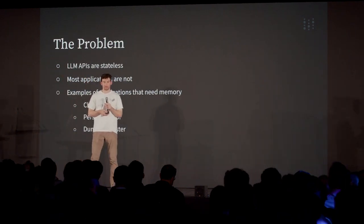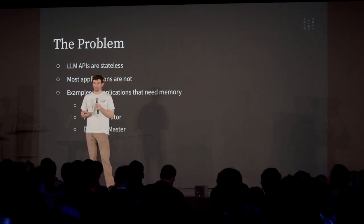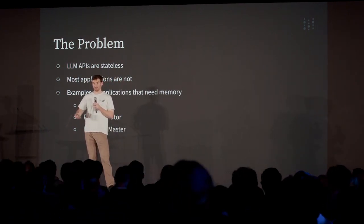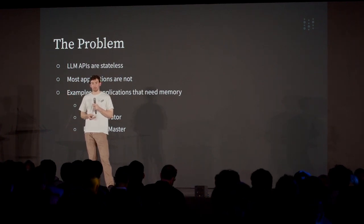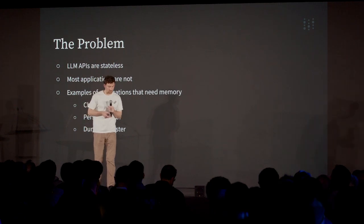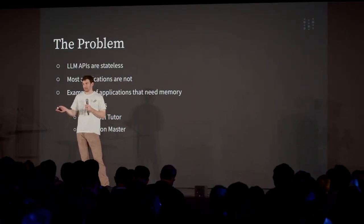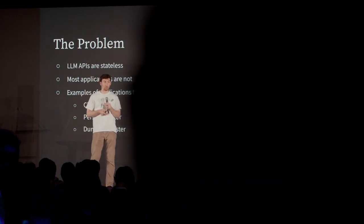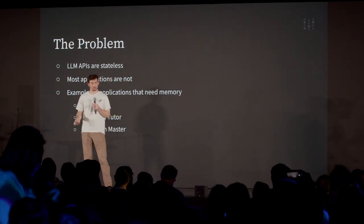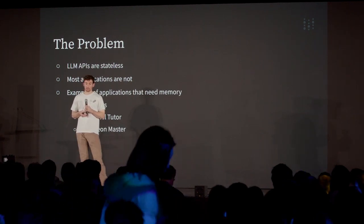The general problem is that LLM APIs are stateless. When you pass a call to OpenAI and then pass another one, it doesn't remember what came before. On the other hand, a lot of the applications that we build are not stateless. Looking at examples, chatbots is an immediate one — you want the chatbot to remember what came before in the conversation.